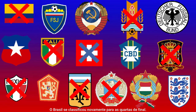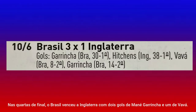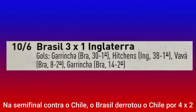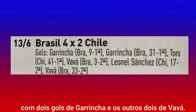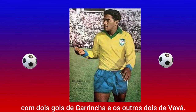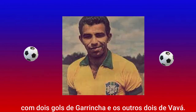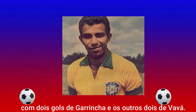Brazil was once again qualified for the quarterfinals. In the quarterfinals, Brazil won their game against England with two goals scored by Mané Garrincha and one scored by Vavá. In the semifinals against Chile, Brazil won 4-2, with two goals scored by Mané Garrincha and the other two scored by Vavá.